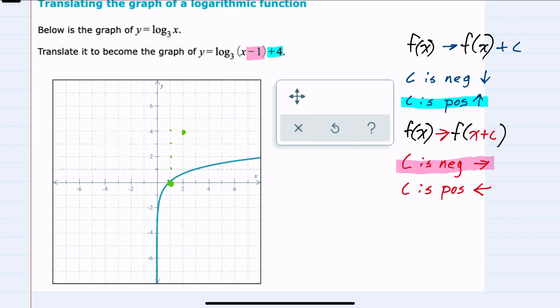Shifting to the right means that the asymptote is no longer x equals 0. The asymptote will be x equals 1. And the same shape as the original, shift it up 4 and to the right 1.